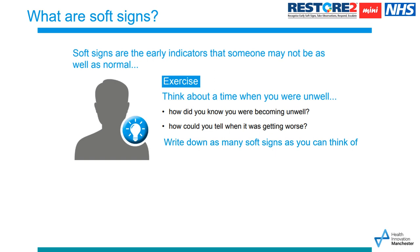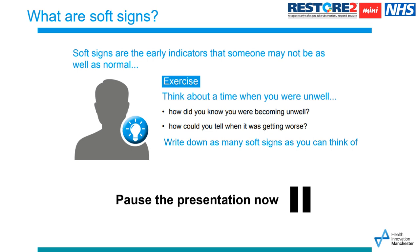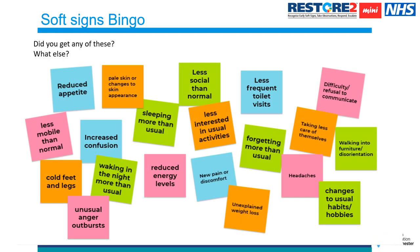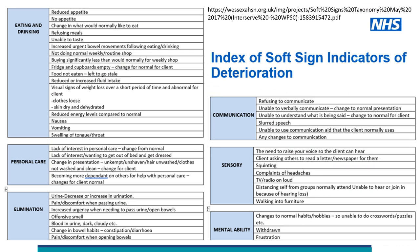Here's an exercise. Pause the presentation and write down as many soft signs as you can think of. Here is an index of soft sign indicators of deterioration. We may not always word them in this way, but I'm sure we can recognise a number of these, either in people we care for or maybe even in ourselves when we've been unwell.